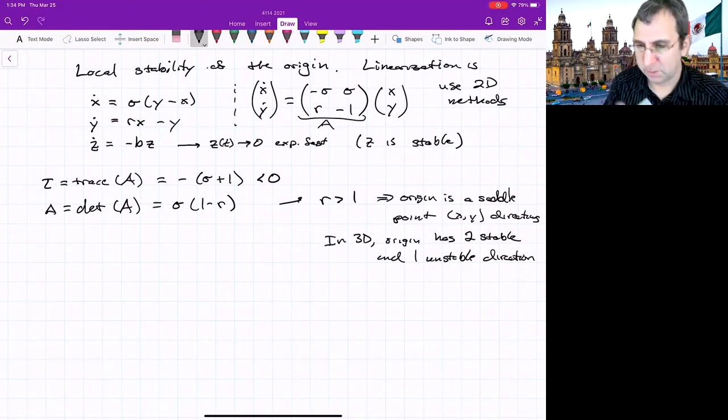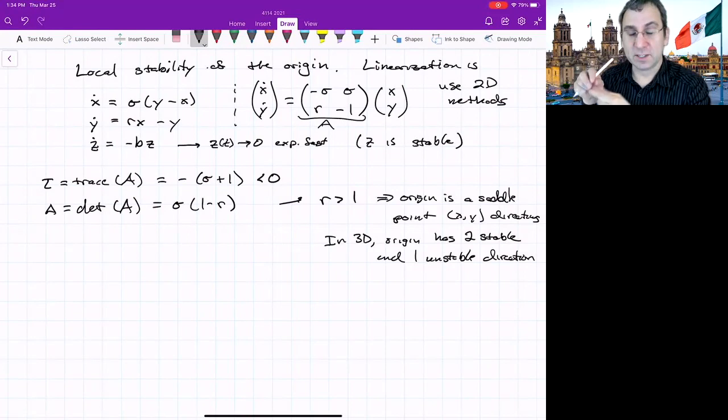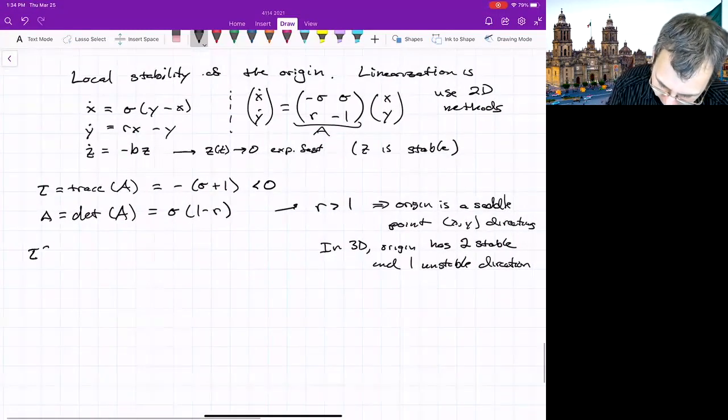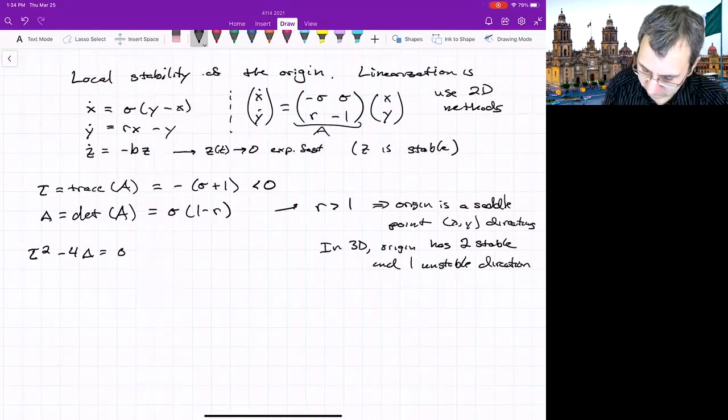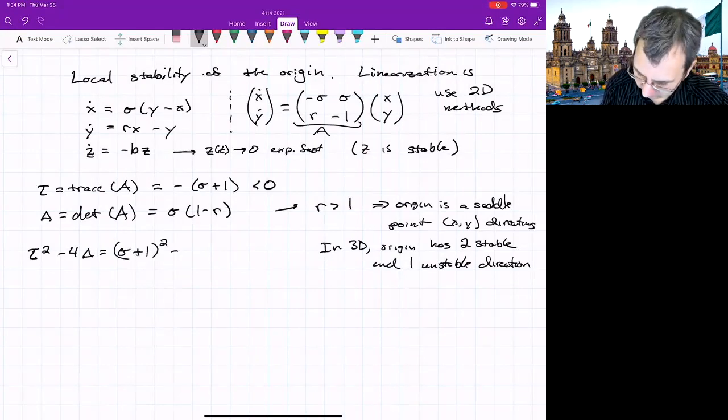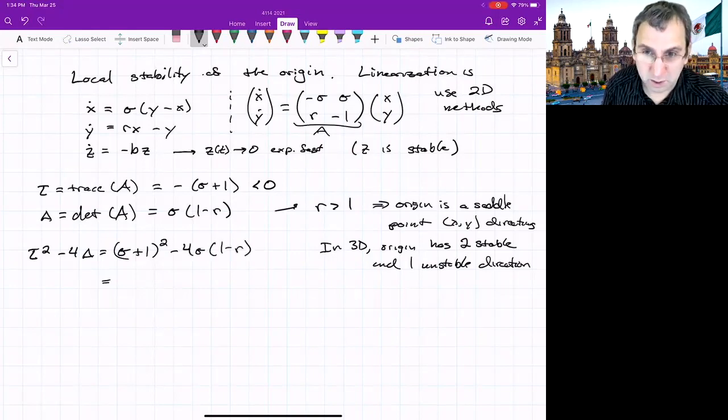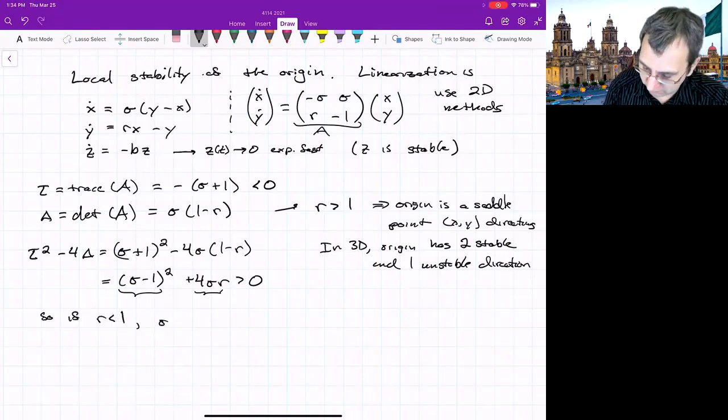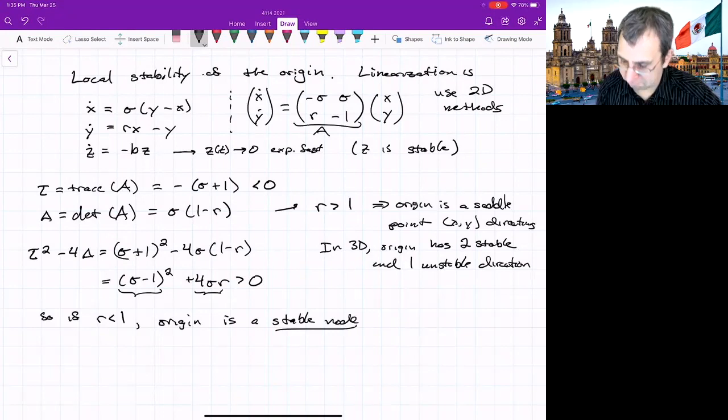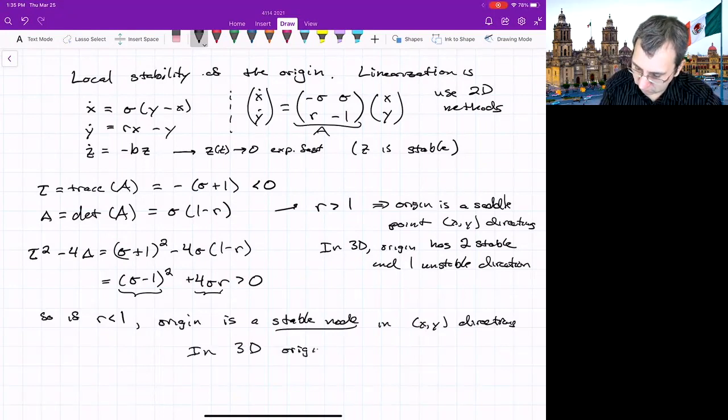What about for r less than 1? For r less than 1, delta is going to be positive. Tau is negative. So we either have a stable spiral or a stable node. To figure out, we need to calculate that dividing line, which is tau squared minus 4 delta. Tau squared minus 4 delta is (sigma + 1)^2 minus 4*sigma*(1-r). We could rewrite that as (sigma - 1)^2 plus 4*sigma*r. This thing is positive. This thing is positive. So this is positive. So if r is less than 1, the origin is a stable node in the xy plane. But it means in 3D, origin is stable. All three directions are converging onto it.